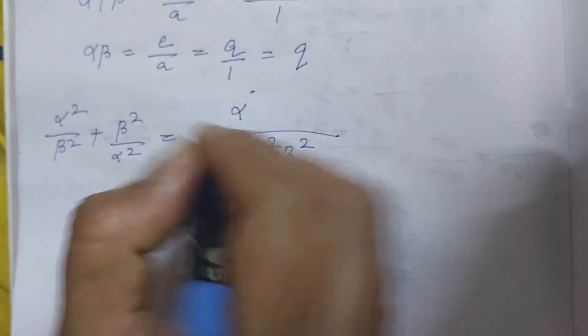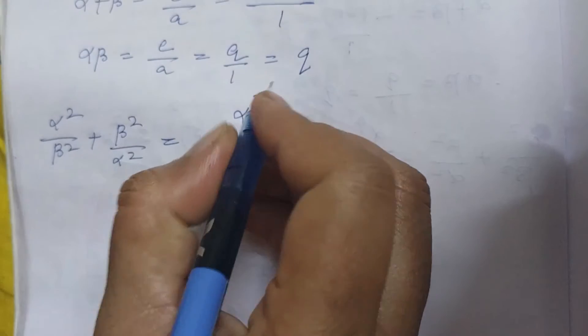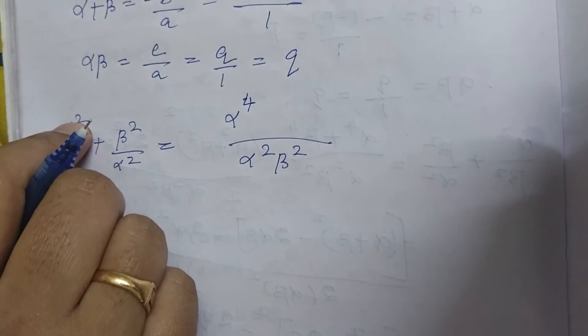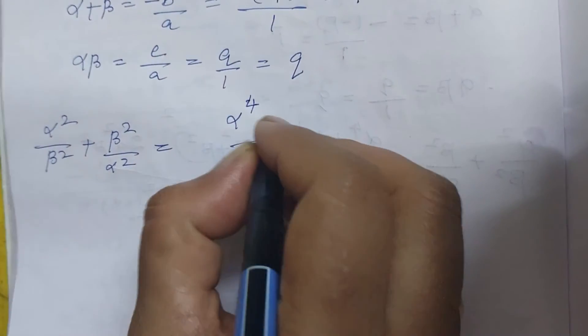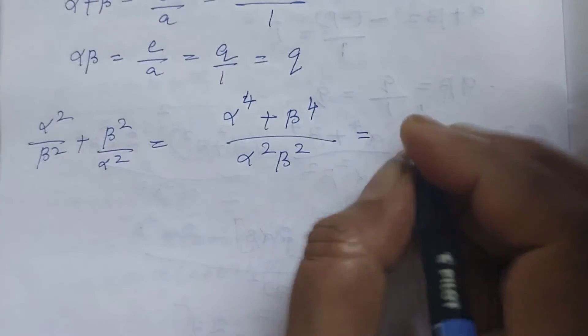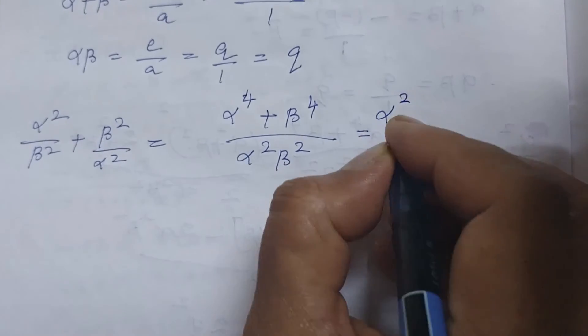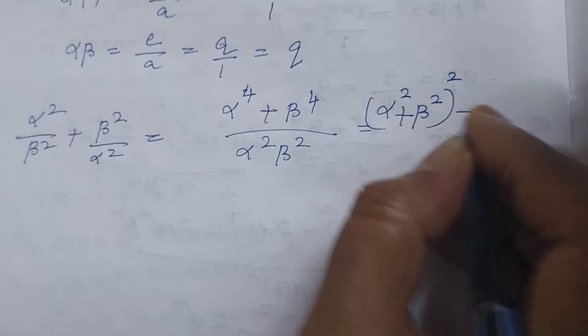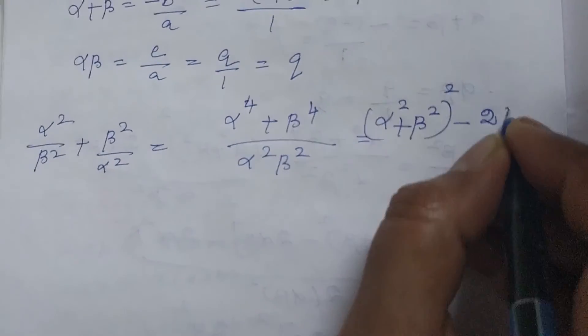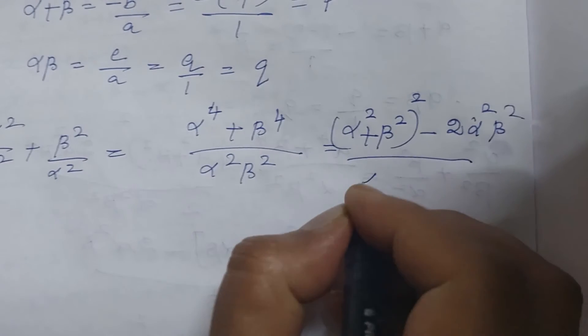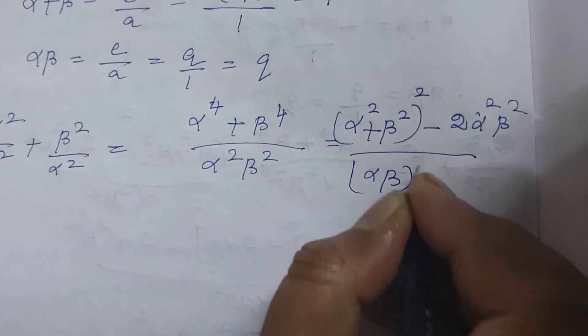Then here alpha square, here there is no alpha square, therefore alpha square into alpha square. So alpha power 4 plus beta square into beta square, beta power 4. That is equal to alpha square plus beta square the whole square minus 2 alpha square beta square, divided by alpha beta the whole square.